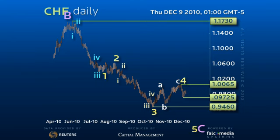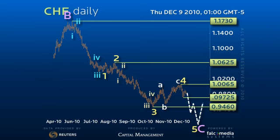In evaluating this downtrend, Wave 3 of this decline, or the $106.25 to $94.60 segment, was shorter than Wave 1. As the third wave can never be the shortest, it should limit the decline to just over $89.00 the figure.